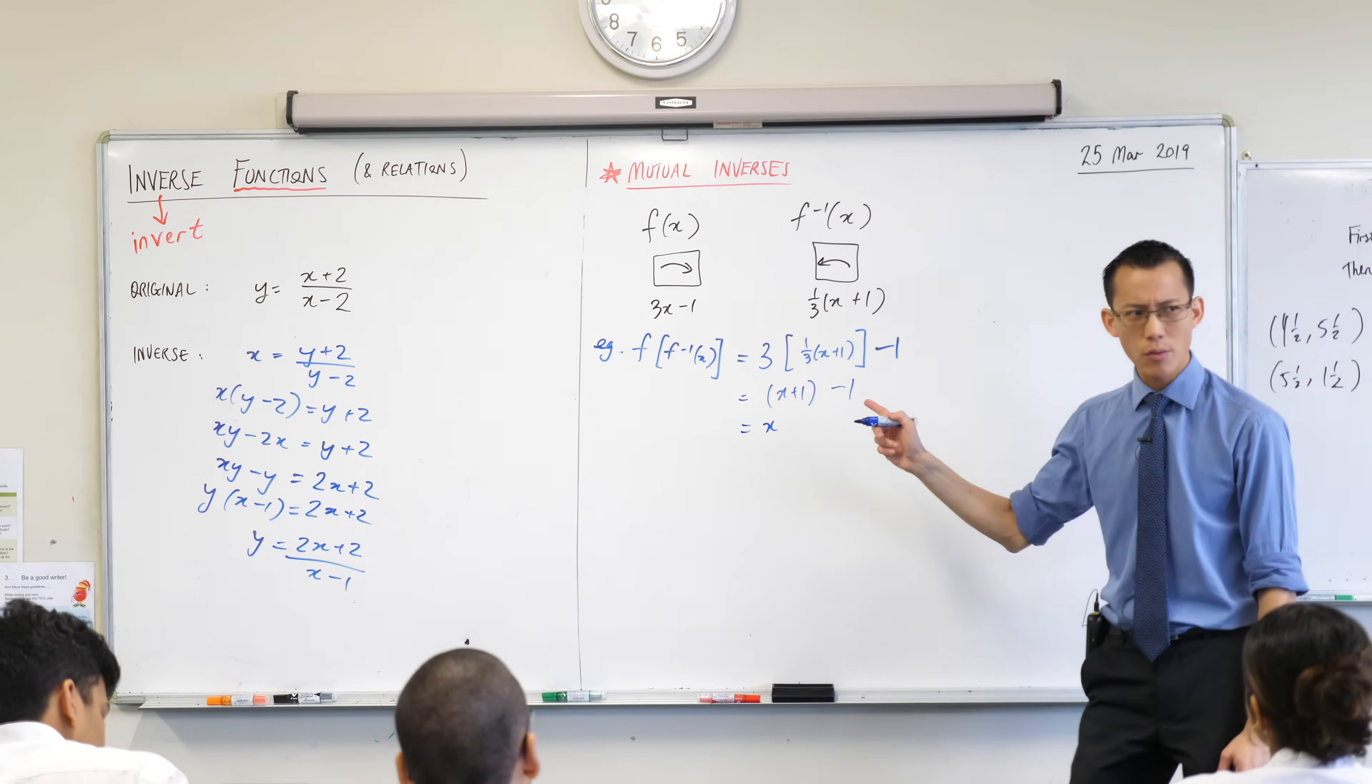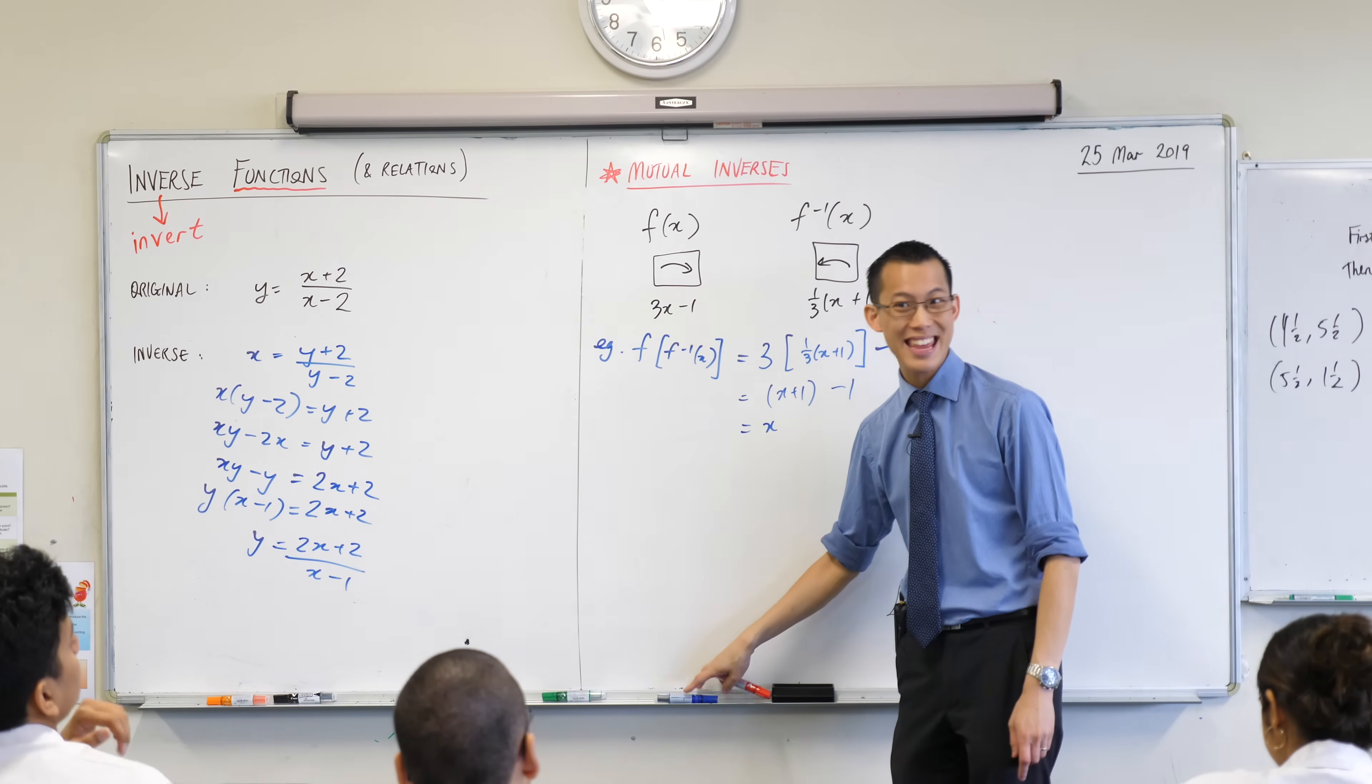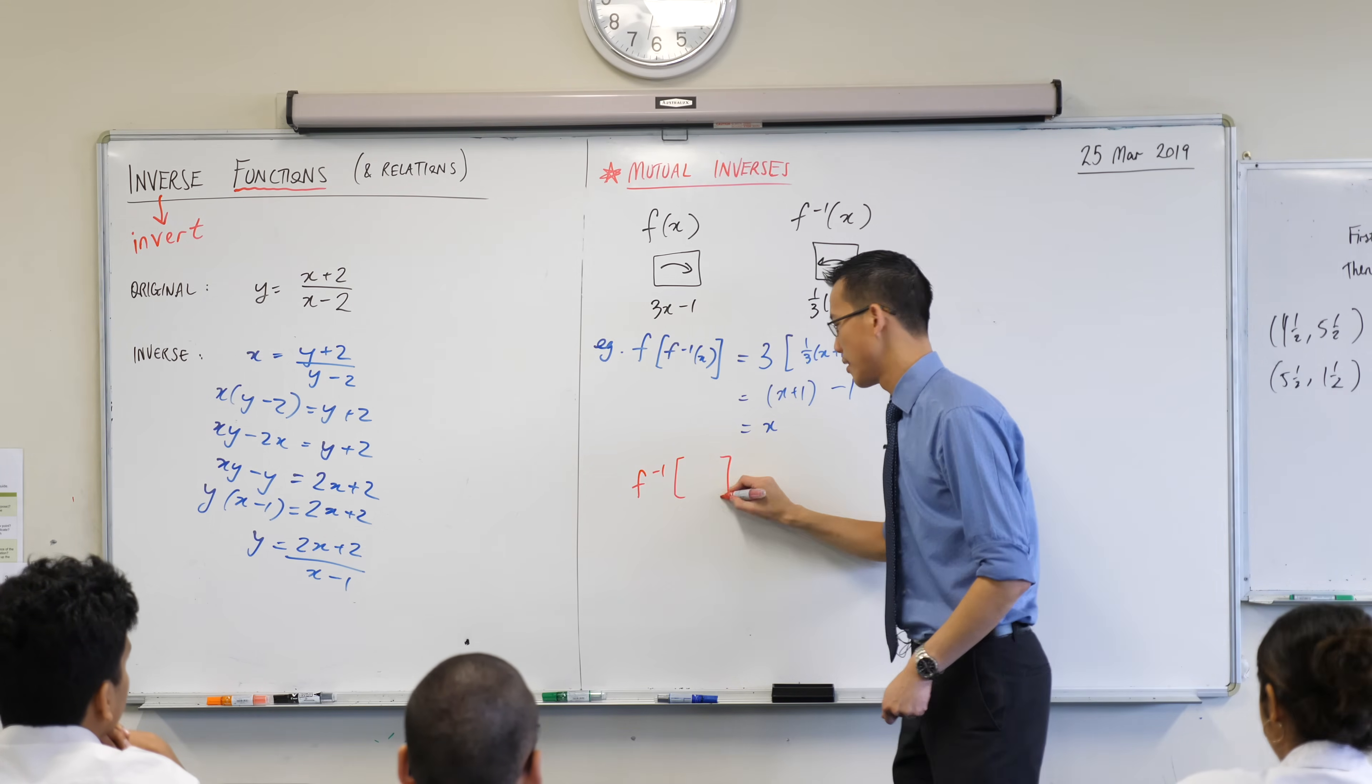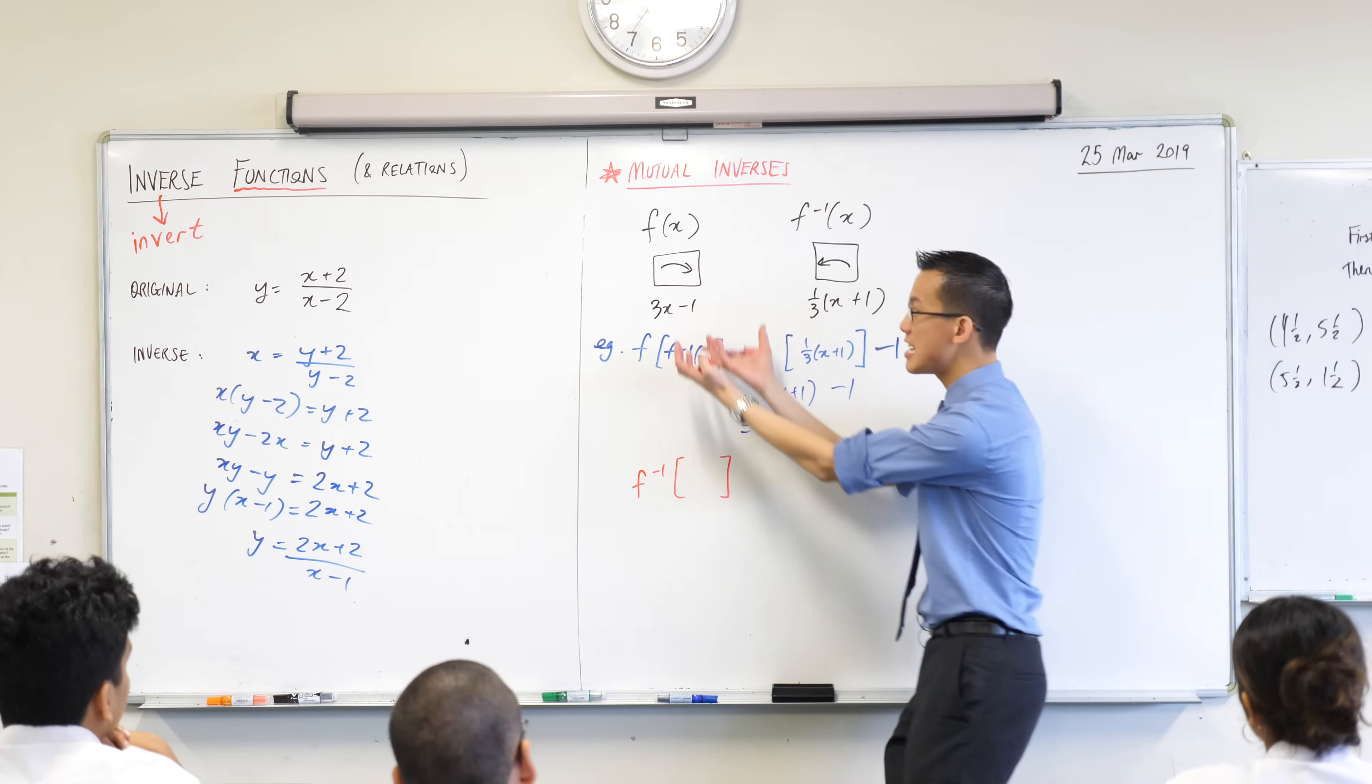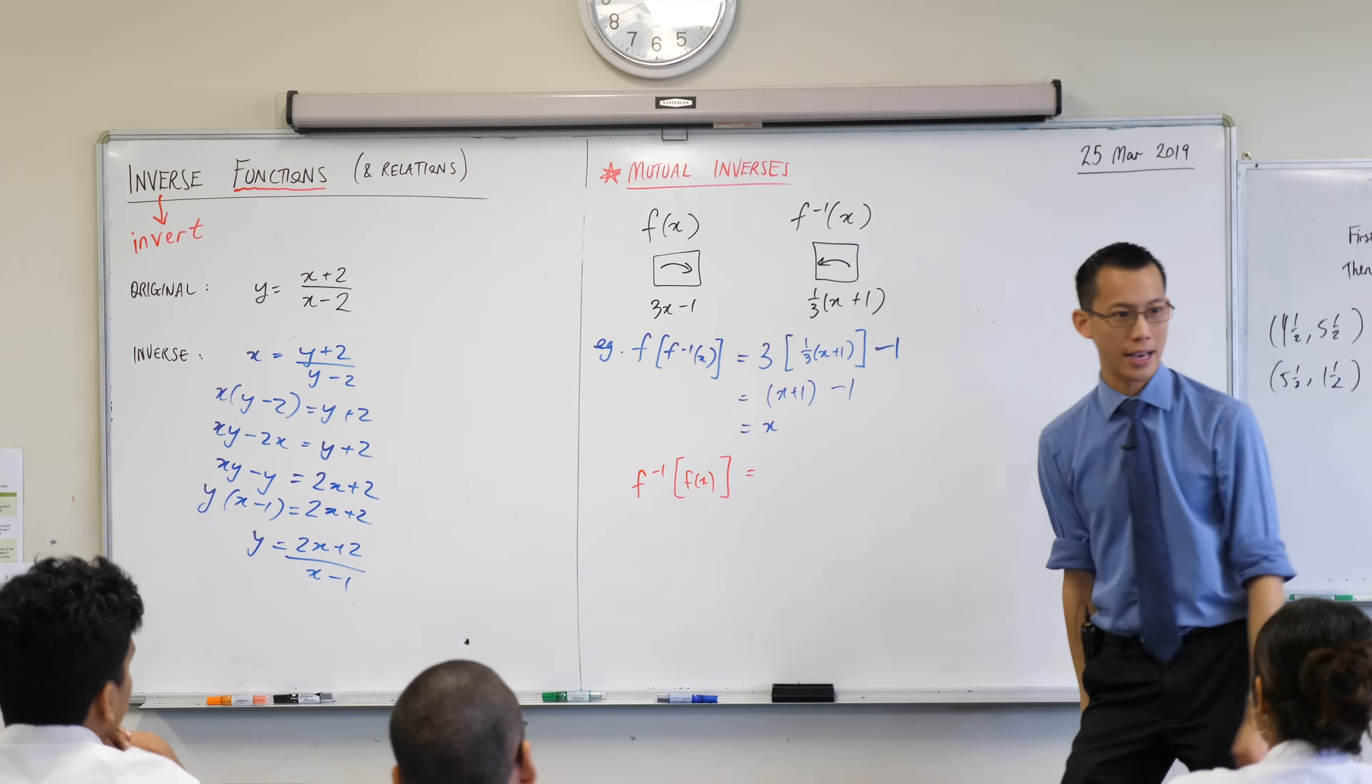And this is what happens if you put the inverse inside the original function. What happens if you did it in the other direction? If you took the inverse function and what you put in was not x or a number, what if you put in the entire original function, f(x)?